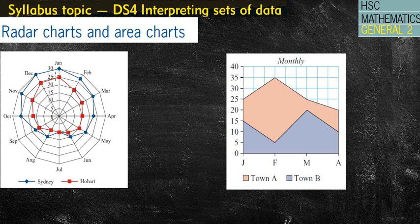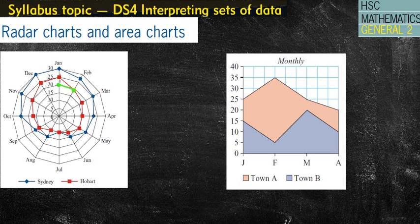Now how do we read these? Generally speaking, if I'm looking for the temperature in Hobart in February — Hobart is the red line — February is down this line in the first quadrant. There's no value on that line directly, so we need to trace back to the vertical axis where there is a scale, and we can see that for February in Hobart it was 20 degrees Celsius.